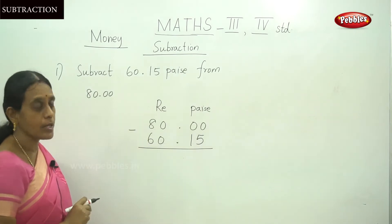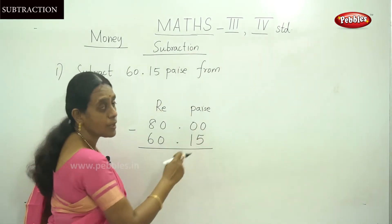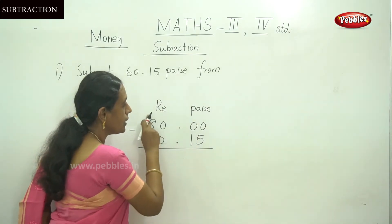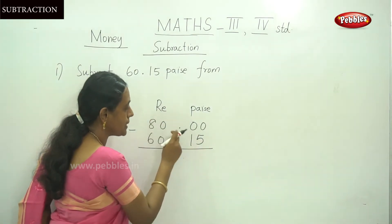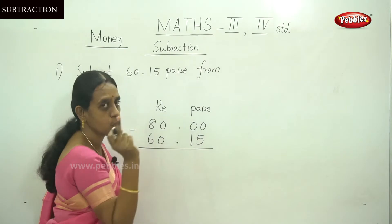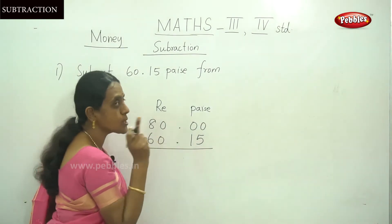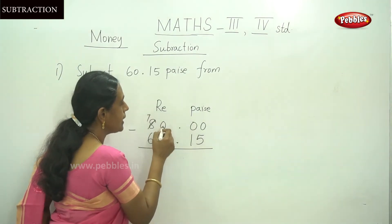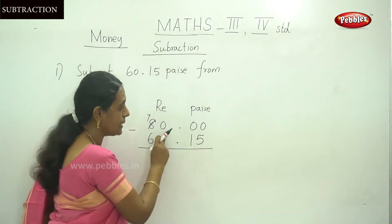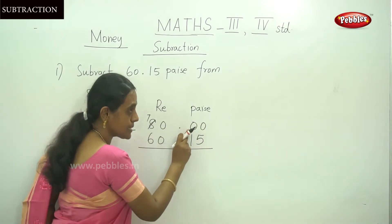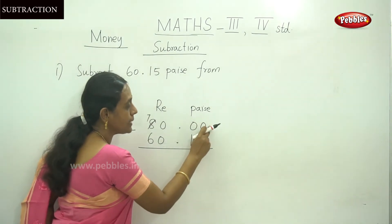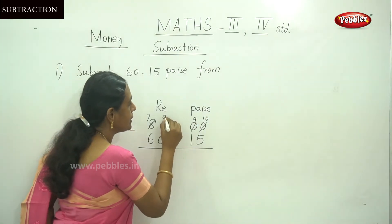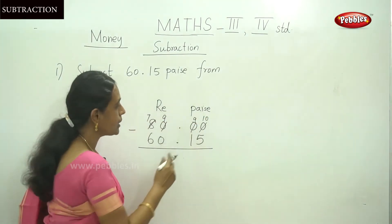Now you have to subtract. Subtract 0 from 5 — you need to regroup. The nearby 10 is also 0 and the nearby 100 is also 0, so you have to carry over from the larger digit. It becomes 7, and this makes it 100, which brings it to 90. From this 90 you bring down 10, making that column 9, and the next column also 9.